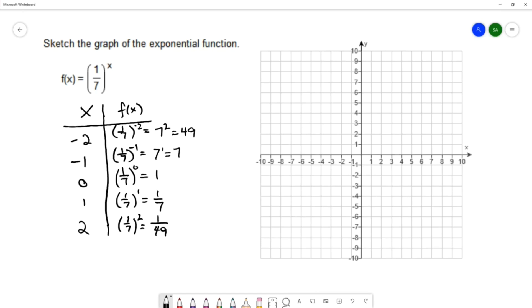This gives me some points to plot. We'll plot (0,1), (1,1/7), (2,1/49), (-1,7), and (-2,49). (-2,49) goes off of our grid, so we can tell that this end is getting large very quickly—it goes off to infinity.